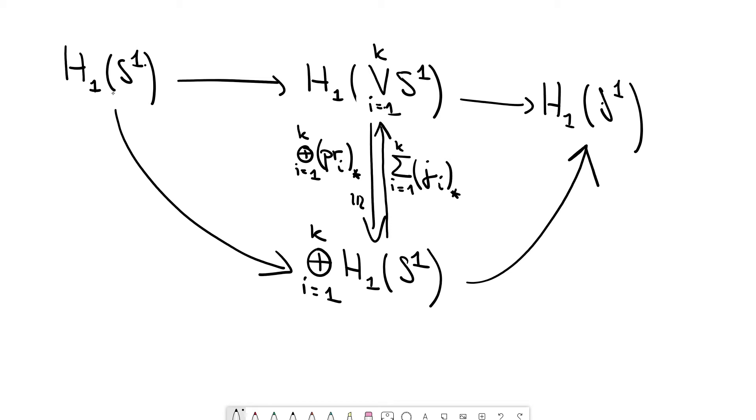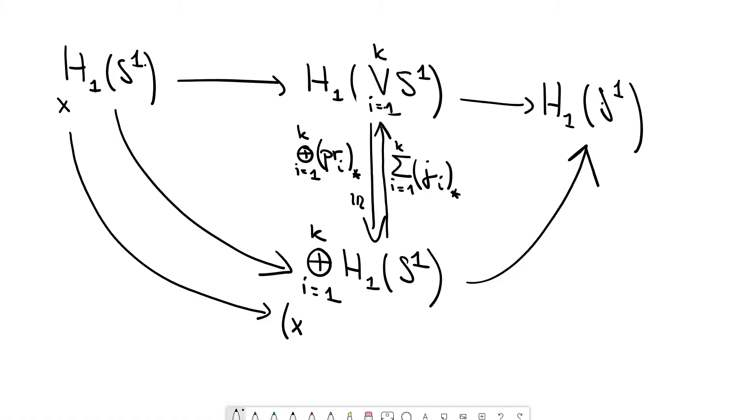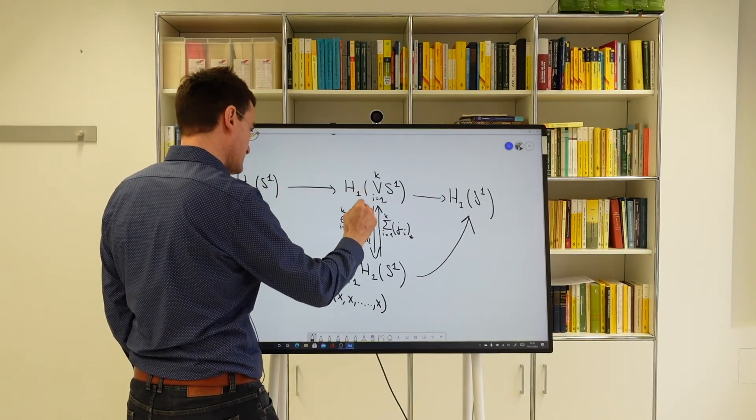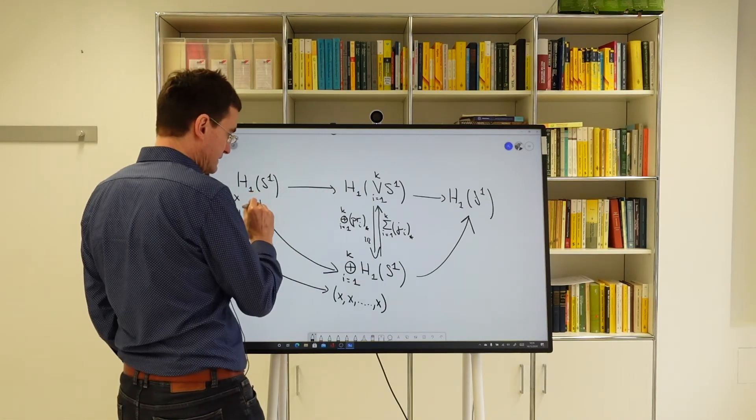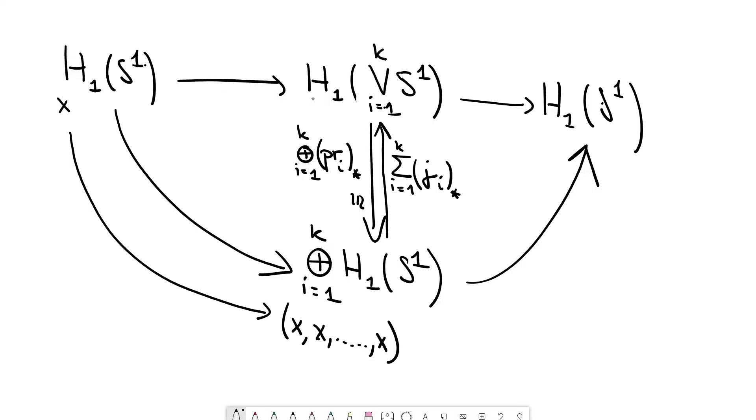So we can complete this to a diagram like that. So what is the map that we obtain from H_1 S^1 to this sum? So I'm claiming that this map here maps x to (x, x, x, ..., x). So this is the diagonal inclusion of an element. Why is that? Well, just follow this arrow. So this arrow here is obtained by the composition here. To check that this image vector is really this diagonal vector, we can go over there, down there, and then project to the kth summand. But if you do that, then you see this is the map induced by the identity. So if you, on the space level, if you go from S^1 to this wedge, and then you take the projection to one summand, this is just the identity, and therefore x is mapped to x in the i-th component.